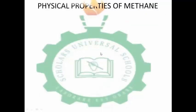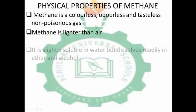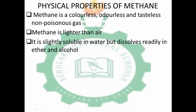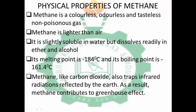Let us look at the physical properties of methane. Methane is a colorless, odorless, and tasteless non-poisonous gas. Methane is lighter than air. It is slightly soluble in water but dissolves readily in ether and alcohol. Its melting point is minus 184 degrees Celsius and its boiling point is minus 161.4 degrees Celsius. Methane, like carbon dioxide, also traps infrared radiation reflected by the earth. As a result, methane also contributes to the greenhouse effect.